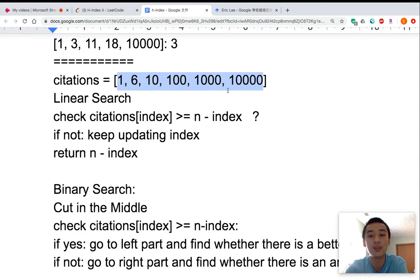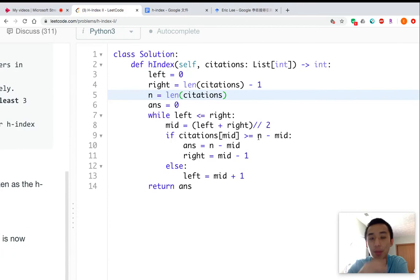For this binary search method, it will only take O(log N), so it is a better solution. Then I want to talk about the implementation of the binary search. We have a left pointer and a right pointer. In the while loop, the first thing we want to do is find the middle point. If the middle point is bigger than the number of papers on the right side including itself, we can update the answer and find a better answer in the left side. Otherwise, we cannot update the answer and find the answer on the right side. After this while loop, we just return the answer.